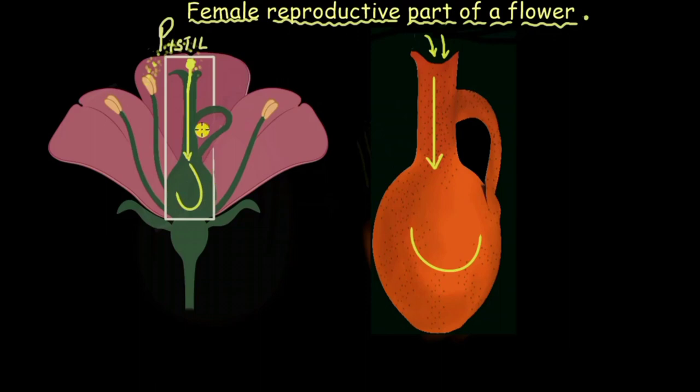Well you need not worry about where this pollen tube has come from or how did it just develop from the pollen because we will have a complete different video on it. But for now just remember that the pollen enters from the top through its pollen tube and goes all the way down to this broad area.